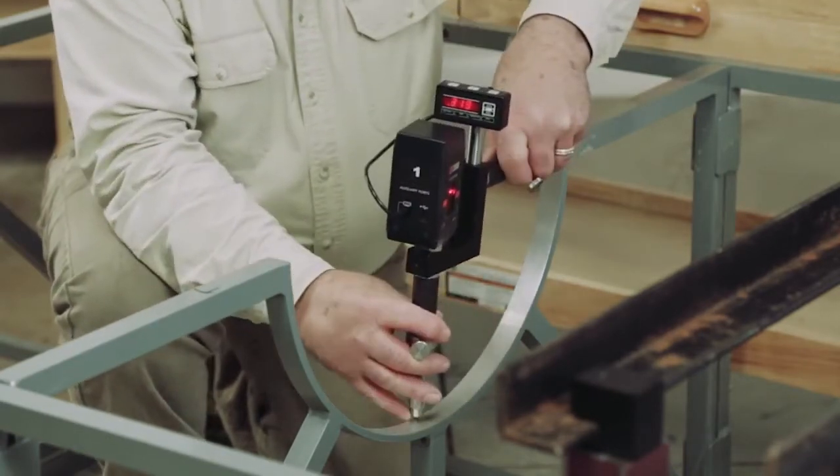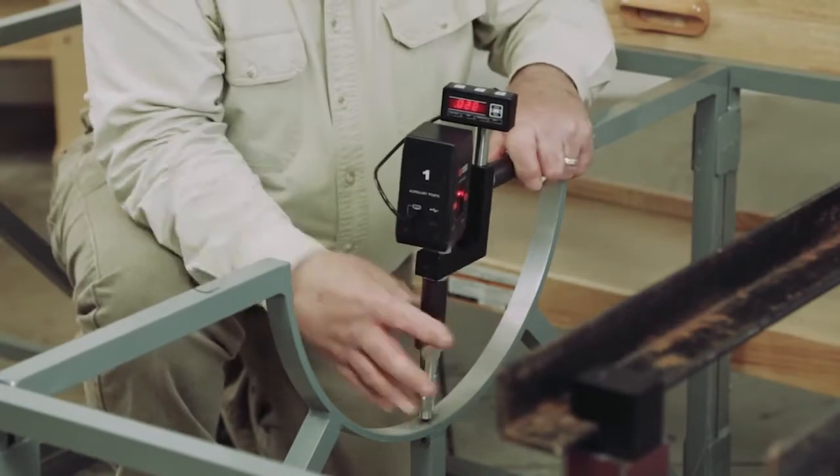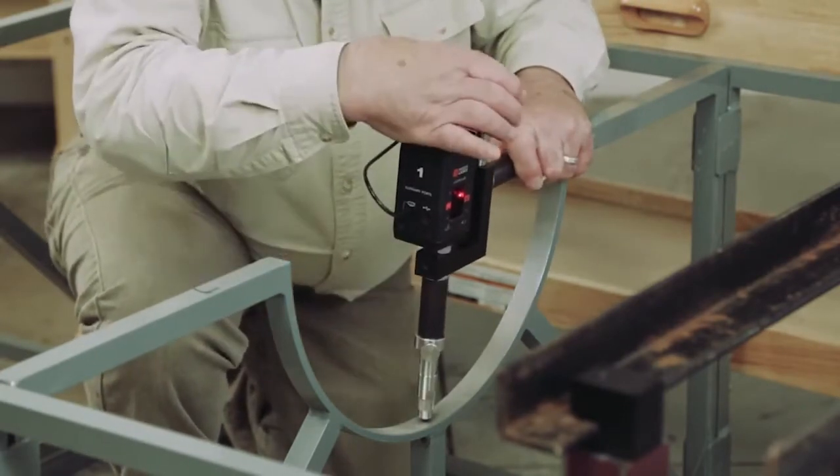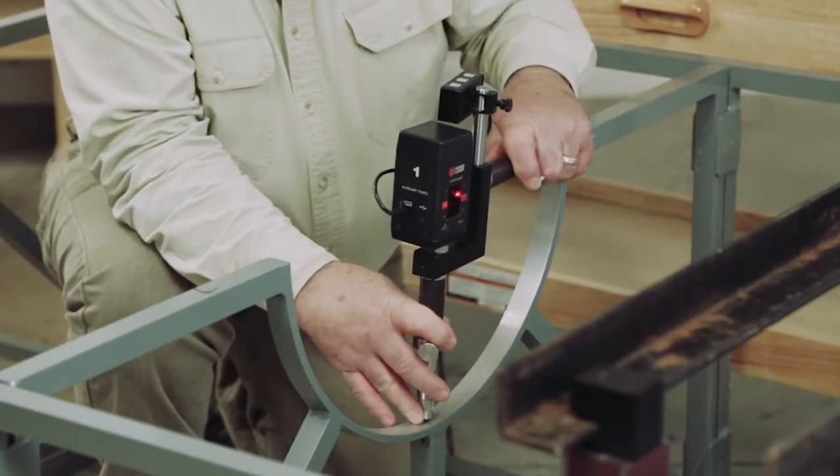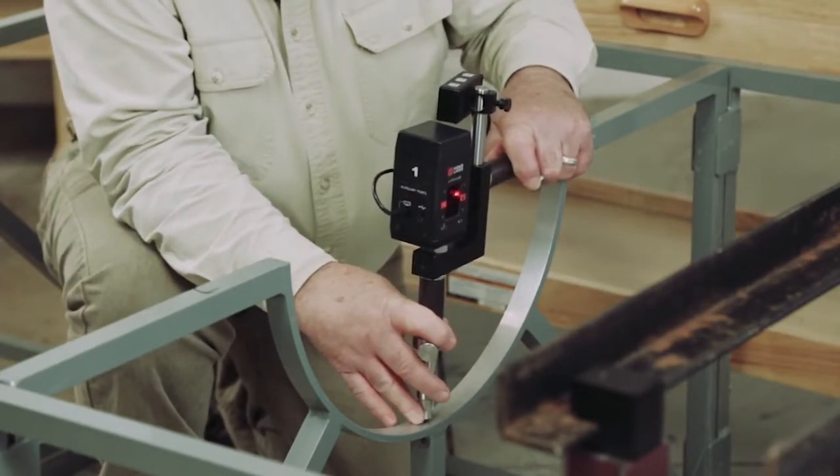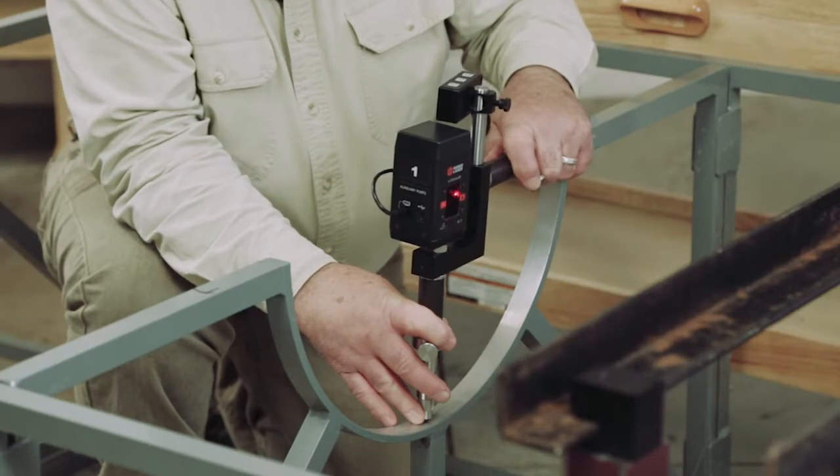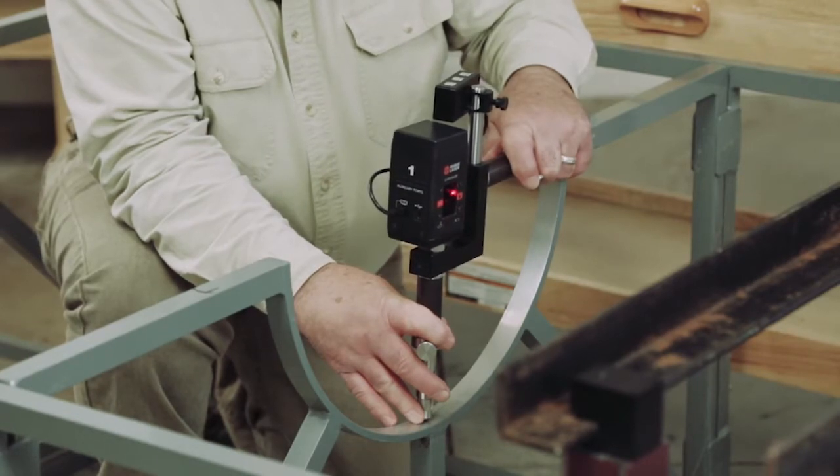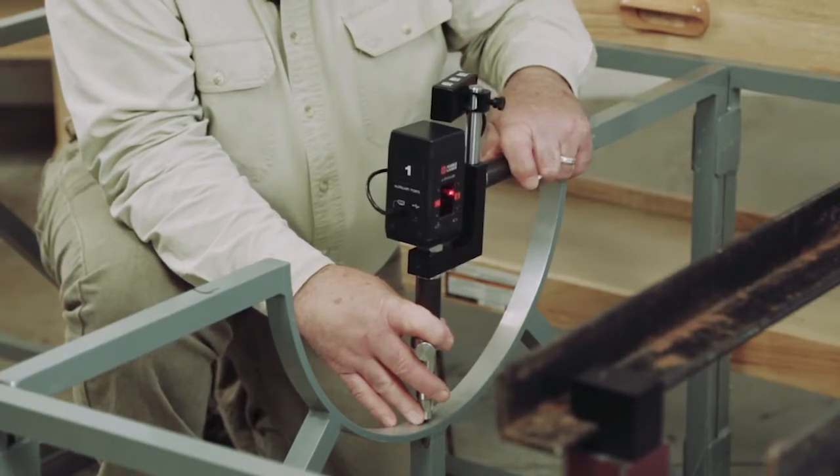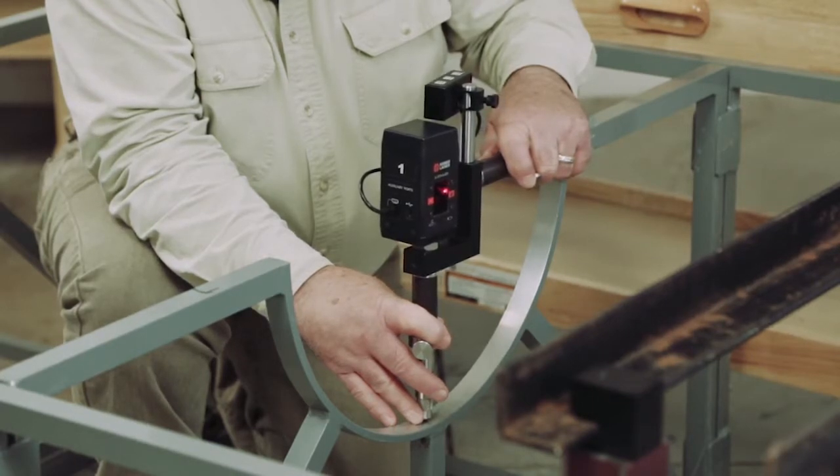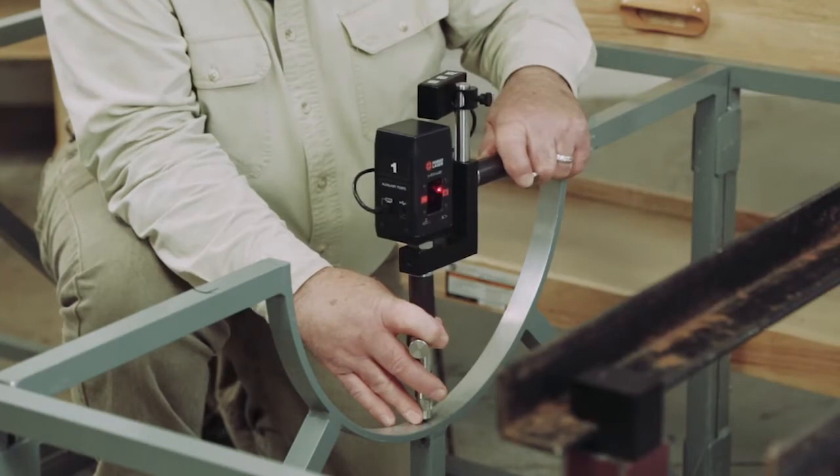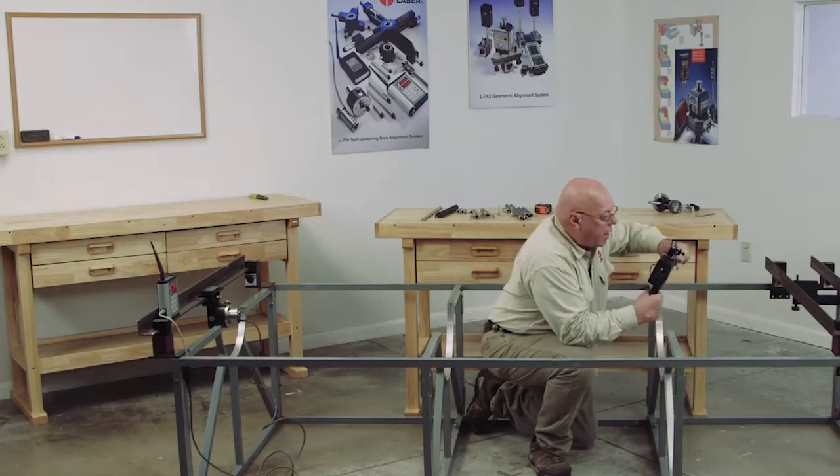Now I'm going to stand it up and do the same thing. I'm going to sweep this in and out until I get my most plus number. I'm at 37, 36, 35. So plus 37 is my most plus number. So now let's do the math on that.